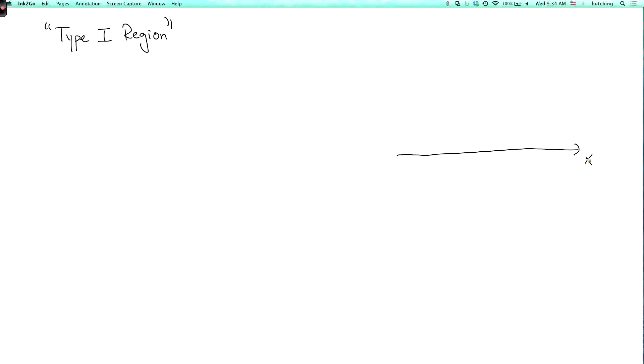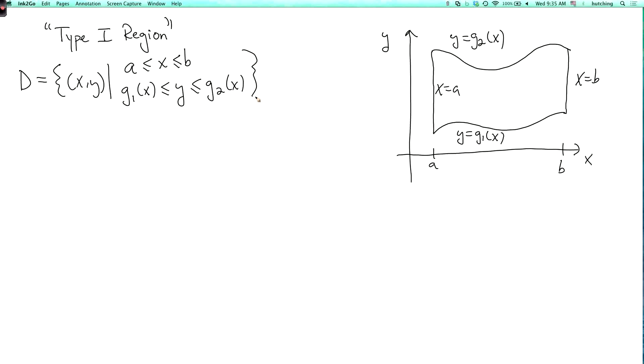Anyway, the type 1 region looks like this. So this is the region in the xy-plane. It has four boundary edges. The first one is the graph of a function y equals g₁ of x, and the second is the graph of some other function y equals g₂ of x. Then the left boundary is the line where x equals a, and the right boundary is the line where x equals b. So in set theory notation, the region D is the set of x and y such that x is between a and b, and y is between g₁ of x and g₂ of x.